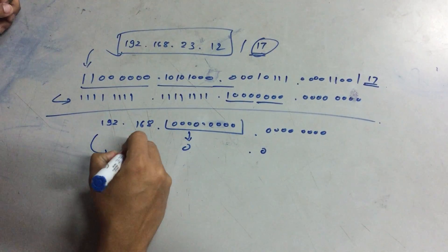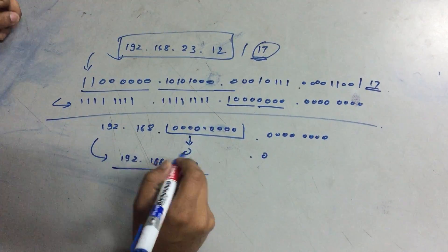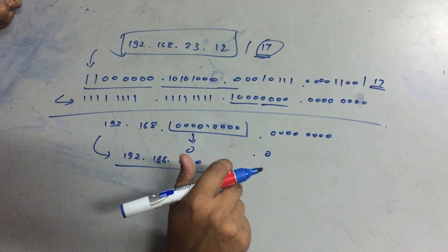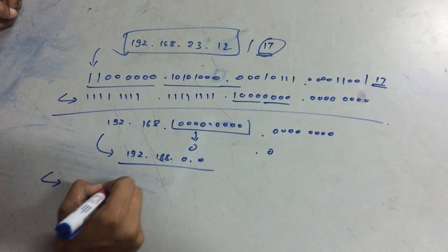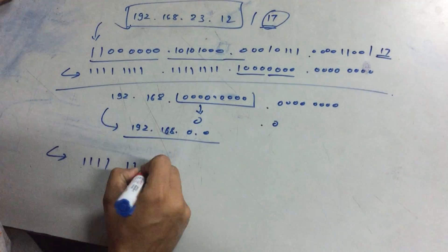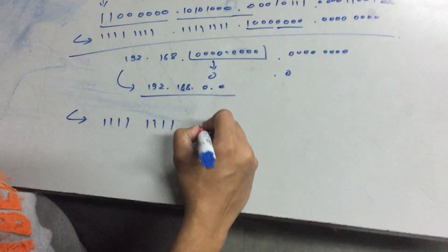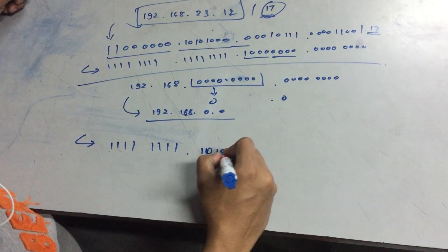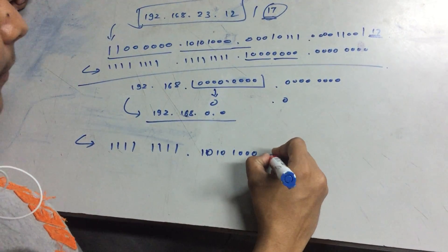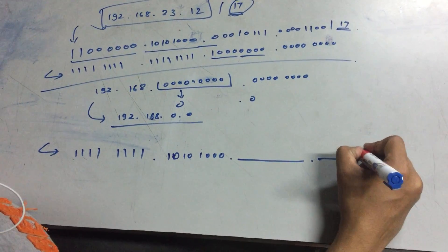So our network ID is 192.168.0.0. Now we want to find the first IP address of this network. What we are going to do is keep the network bits and set the last bit as 1, remaining all 0.